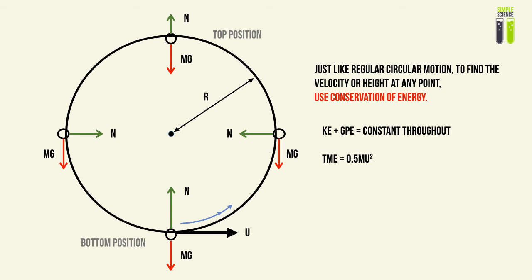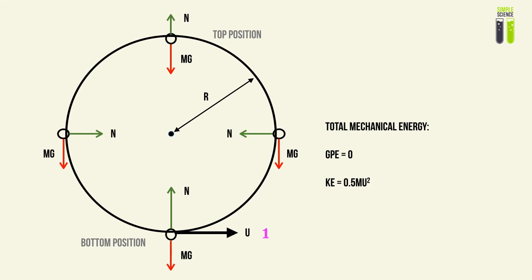Just like other vertical or horizontal circular motion examples, we use conservation of energy, given that the wire is smooth and there are no resistive forces. The total mechanical energy is constant, so the sum of kinetic energy and gravitational potential energy is constant throughout. Taking the bottom position as h = 0, there is no GPE there, so total mechanical energy equals ½mu².